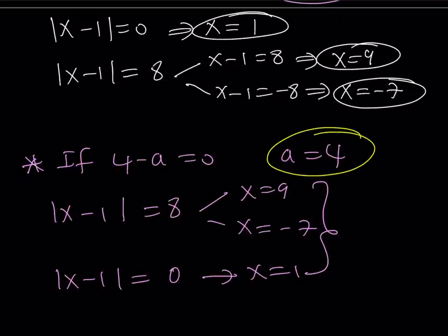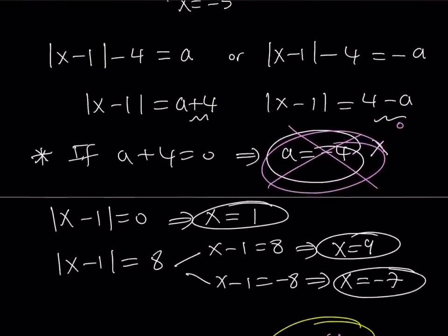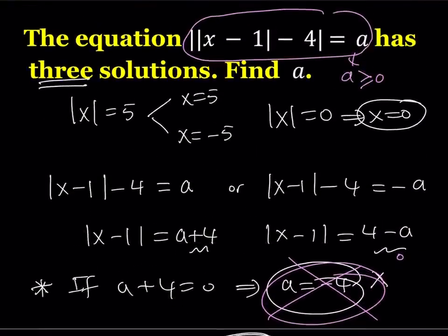Make sense? So a equals negative 4 did not work because if you substitute that into the original equation, we get something that doesn't make sense for absolute value. We're talking about the absolute value of real numbers. Even if you find the absolute value of a complex number, it's still going to be non-negative. So the value of a from here equals 4.